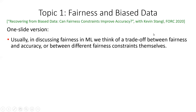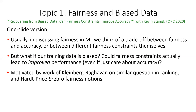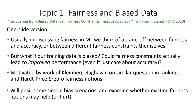Usually in discussing fairness in machine learning, we think of a trade-off between fairness and accuracy, or between different fairness constraints. What I want to think about here is: what happens if our training data is biased? In that case, could it be that fairness constraints actually lead to improved performance, even if all we care about is accuracy? Normally constraining an optimization problem can only make things worse, but if you're optimizing the wrong thing, maybe those constraints can help. This is motivated by work of Kleinberg and Raghavan on ranking, and by Hart-Price-Srebro fairness notions. We'll posit some simple bias scenarios and examine whether existing fairness notions might help or hurt.